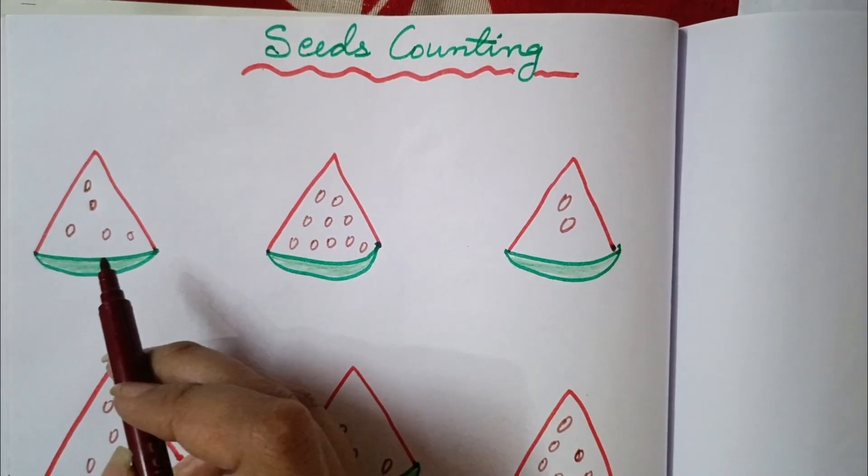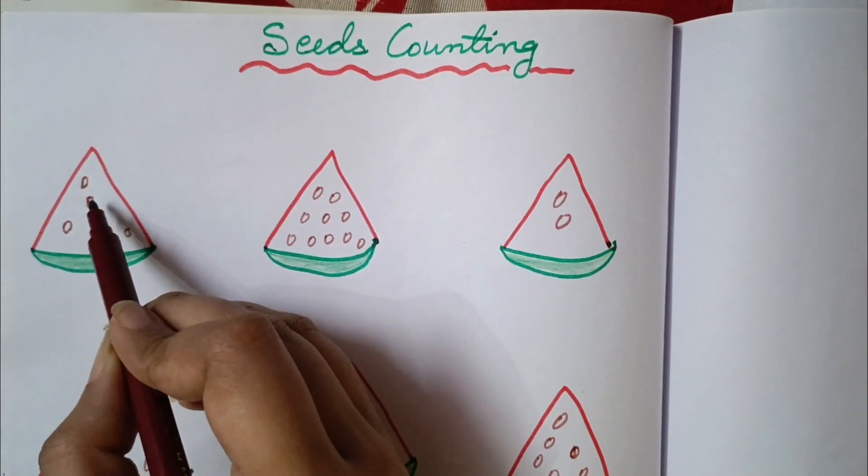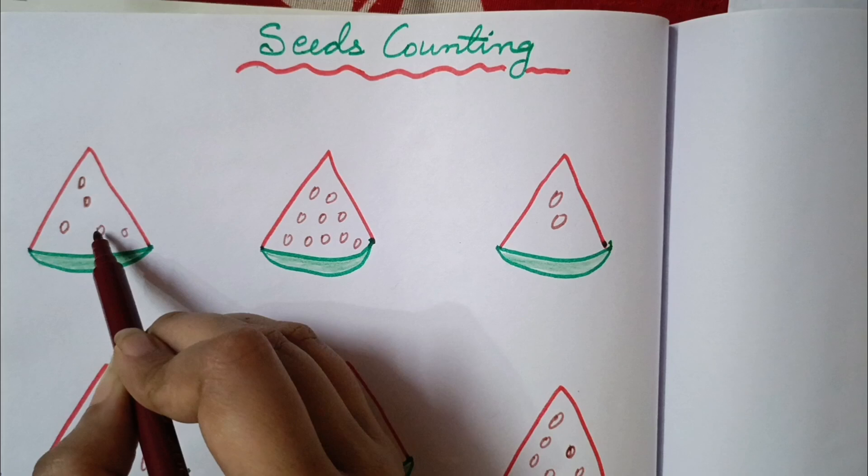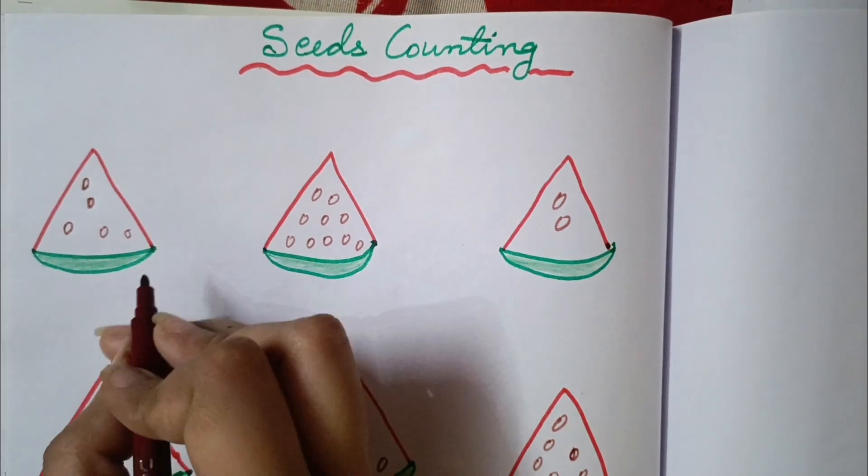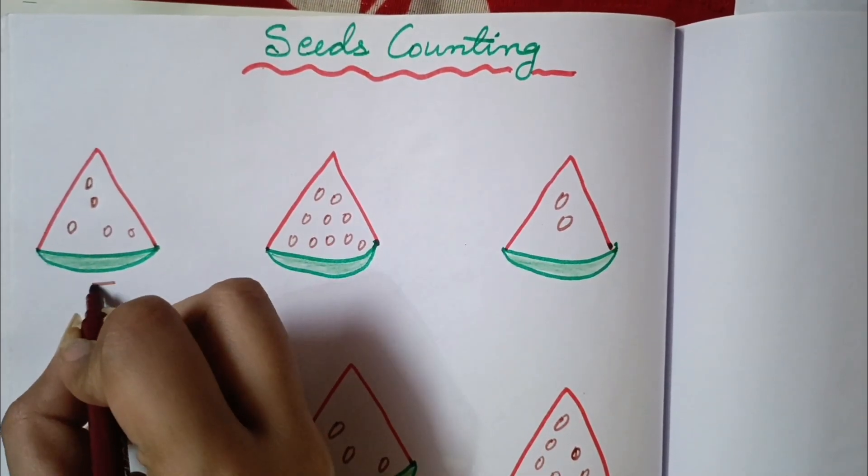First we will count this watermelon seeds. 1, 2, 3, 4, 5 means this watermelon has 5 seeds. So we will write here 5.